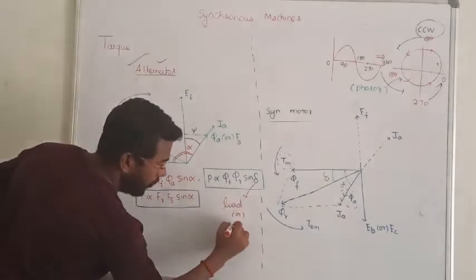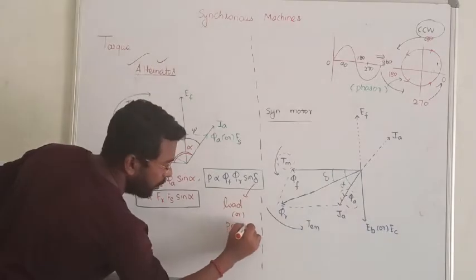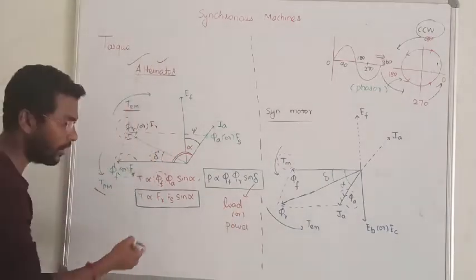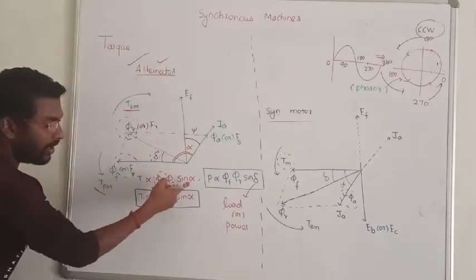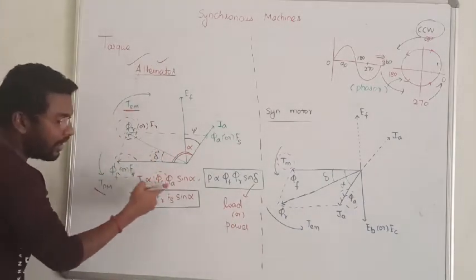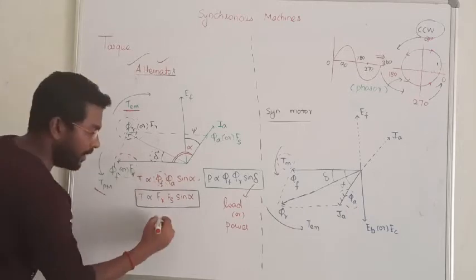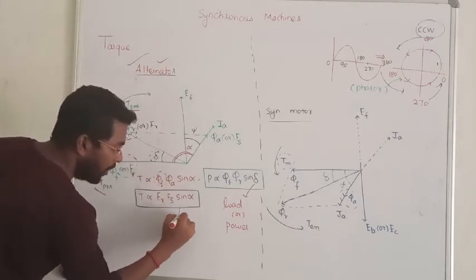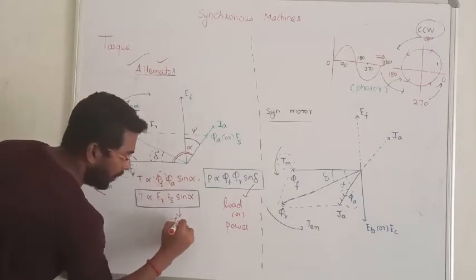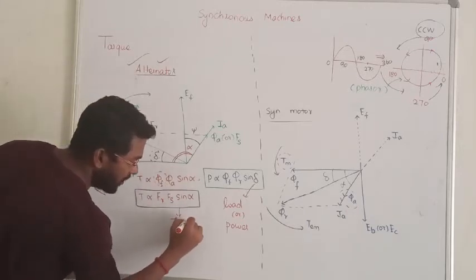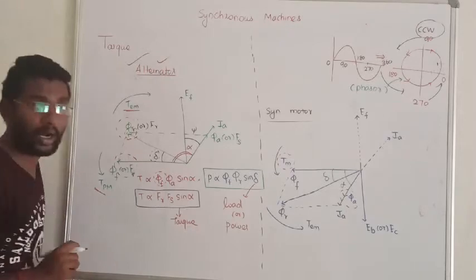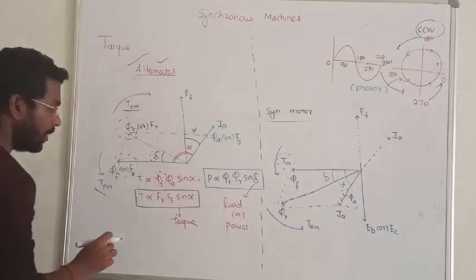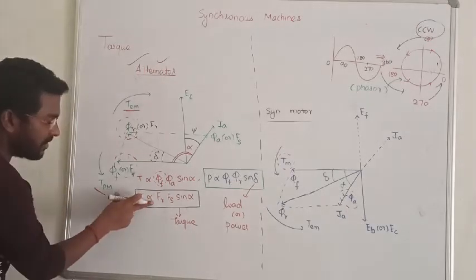This is called the load angle or power angle. In the alpha angle, this is called the torque angle. So that is the difference between torque angle and the load or power angle.